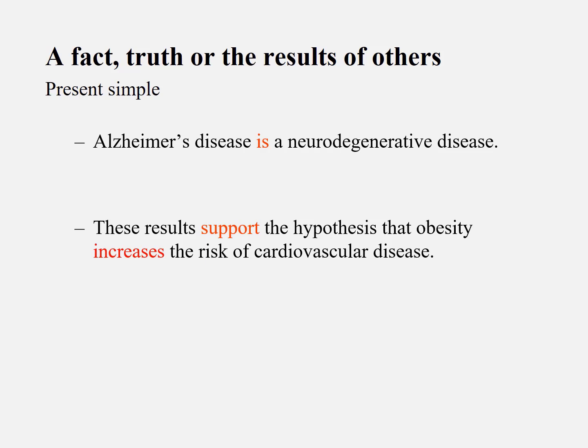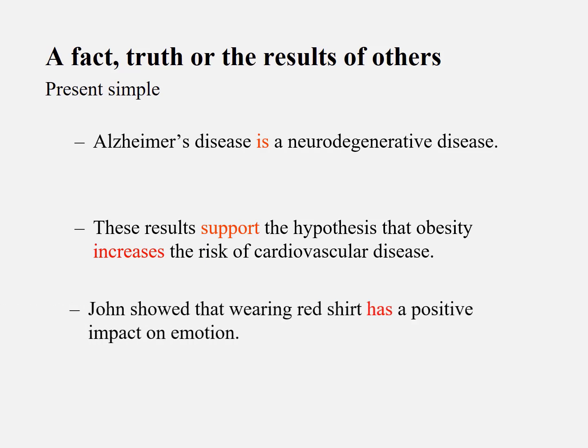'Obesity increases the risk of cardiovascular disease' — therefore you just use the present simple tense. Here's another sentence: 'John showed that wearing a red shirt has a positive effect on emotion.' You use 'has' because the result comes from John — it is a general finding. But 'John showed' uses the past tense because he showed it before, for example two years ago. Then we talk about 'red shirt has a positive effect,' meaning you cite the results of others.